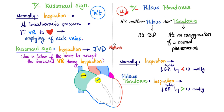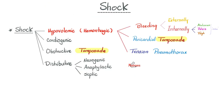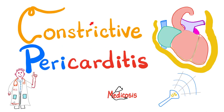For pulsus paradoxus, there is diminishing of the systolic blood pressure during inspiration — that's why I drew a smaller circle. Remember that both cardiac tamponade and constrictive pericarditis can cause obstructive shock. We'll review constrictive pericarditis quickly, then cardiac tamponade, then compare between the two.